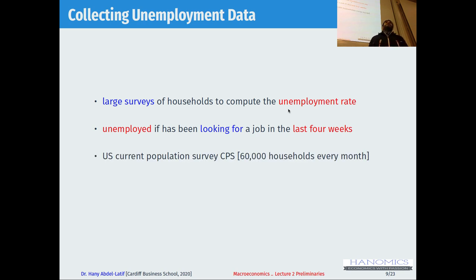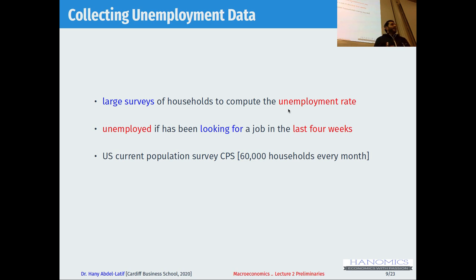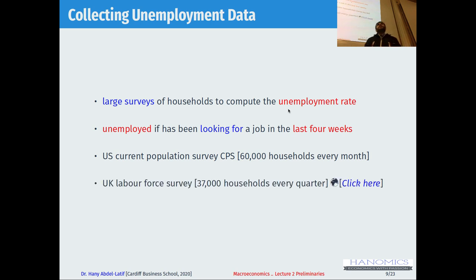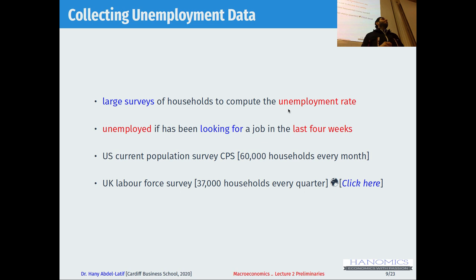In the US, this survey is called the Current Population Survey (CPS), and they interview 60,000 households every month. Based on this data they calculate the unemployment rate. In the UK, it's called the Labour Force Survey, and they interview 37,000 households every quarter. If you click the link provided, you can learn more about the Labour Force Survey in the UK.